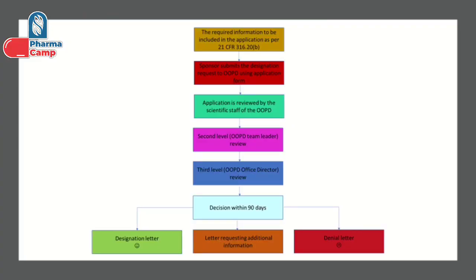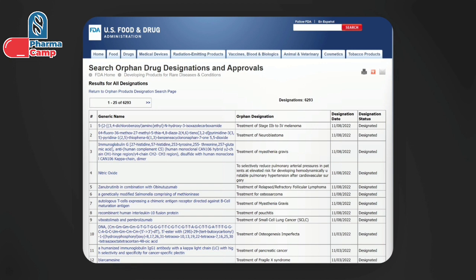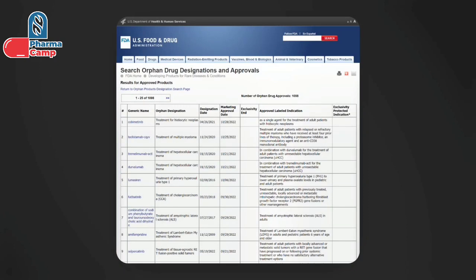Within 90 days, the decision is made — either your product receives the designation or it receives a denial letter. If additional information is required for further assessment, the health authority will issue a letter requesting it. After the decision, FDA publishes the information in the orphan designation database on their website. You can check this register to see which products have orphan designation and for what indication, as shown in the figures on screen.